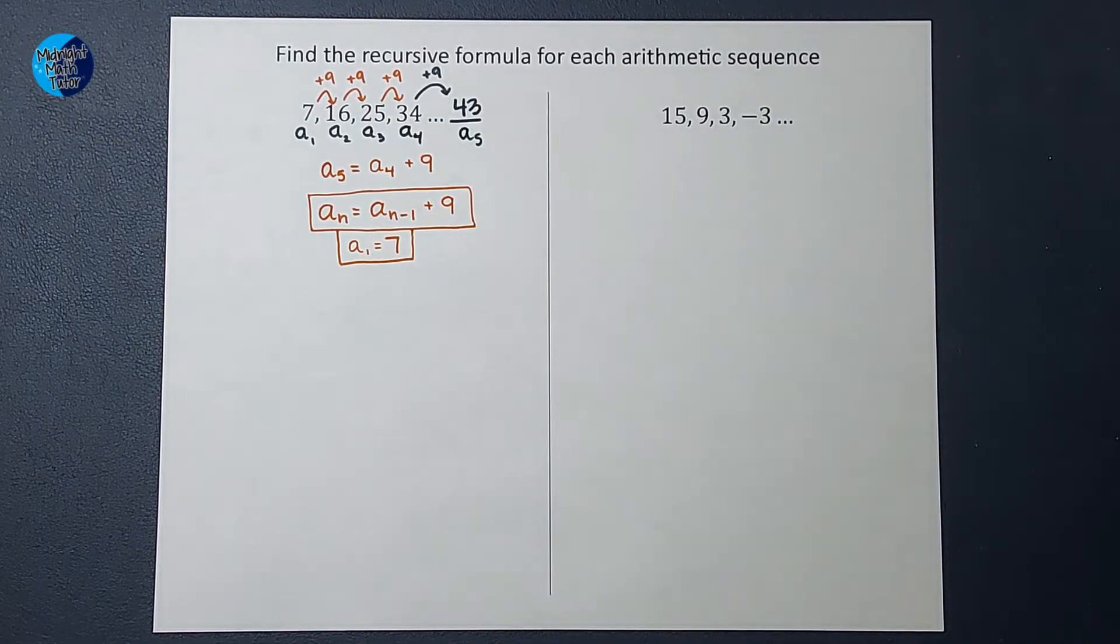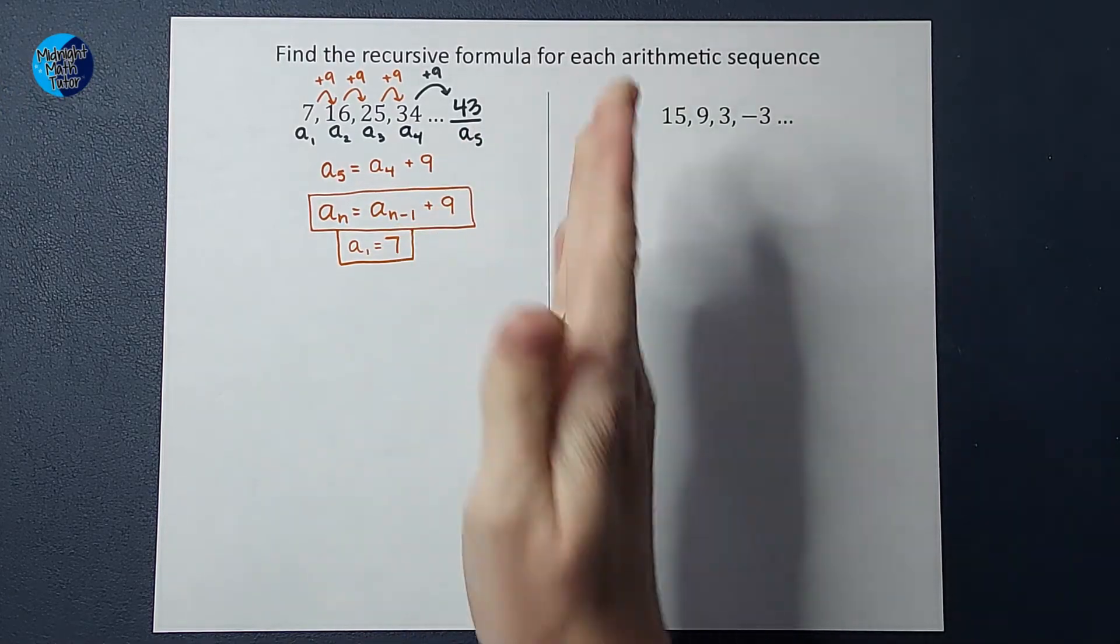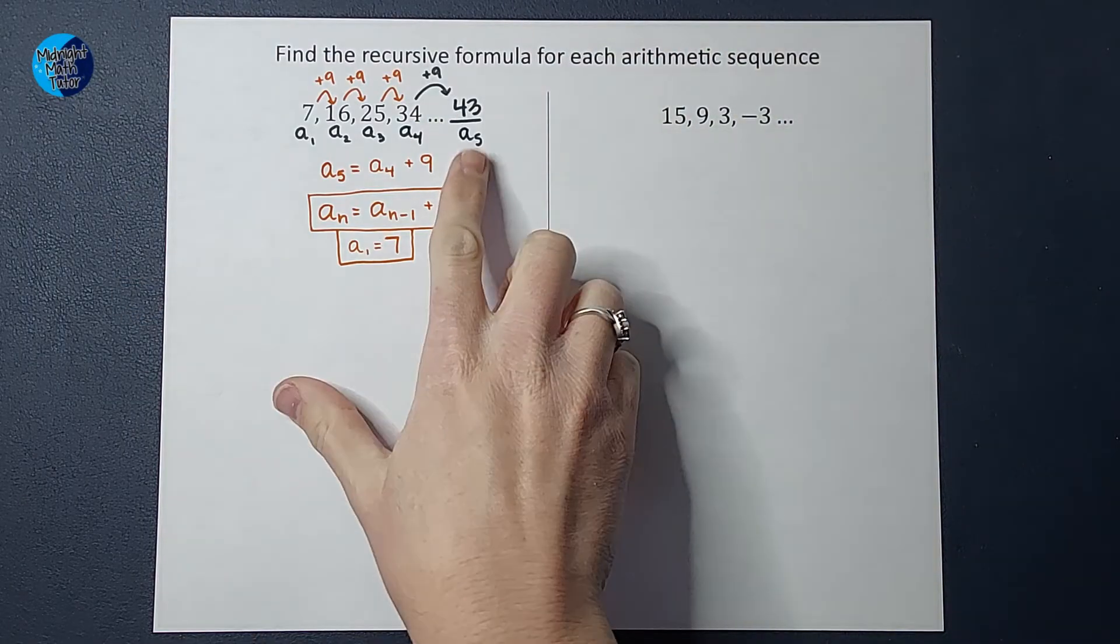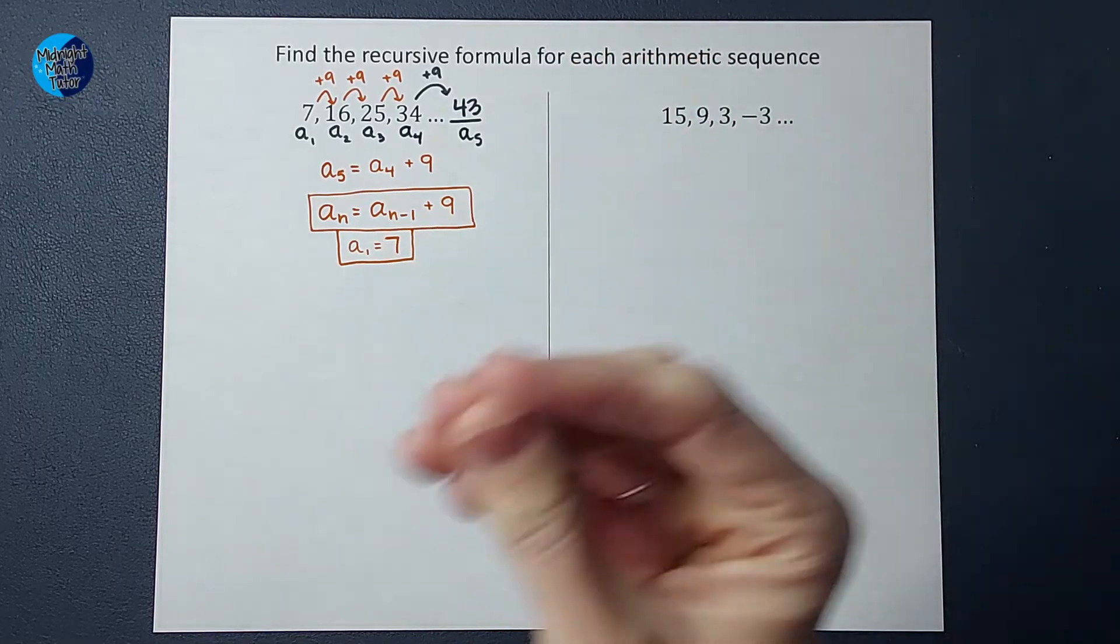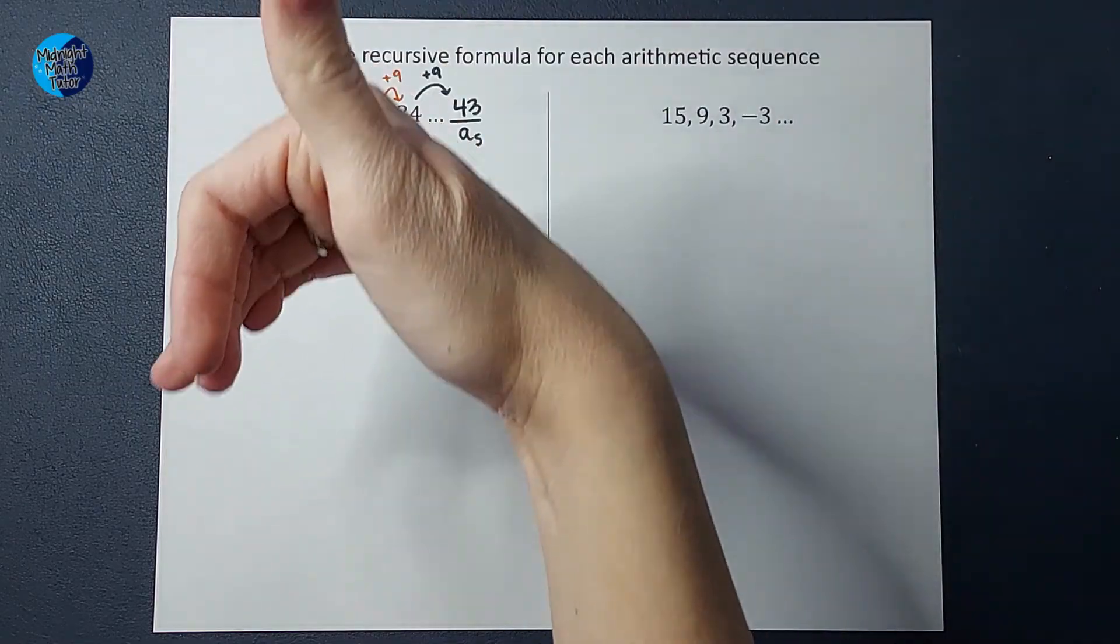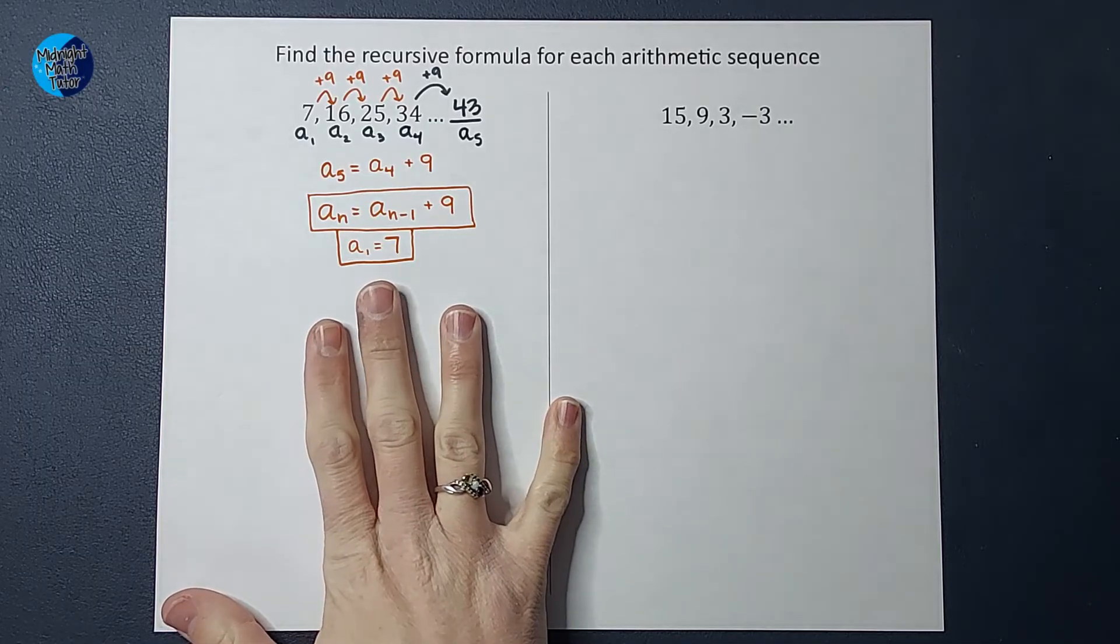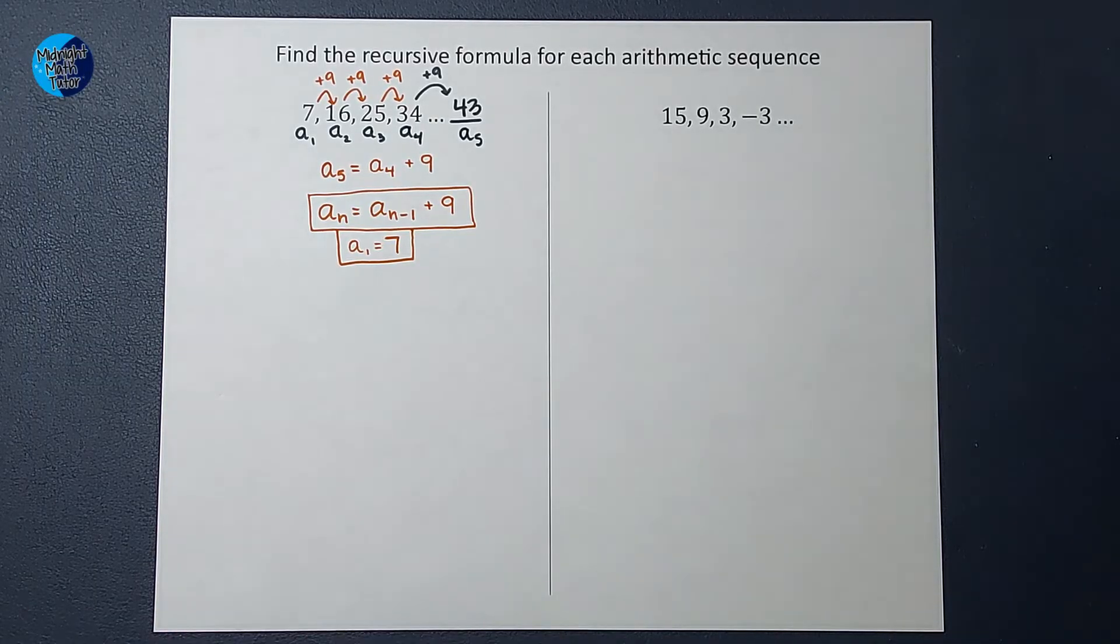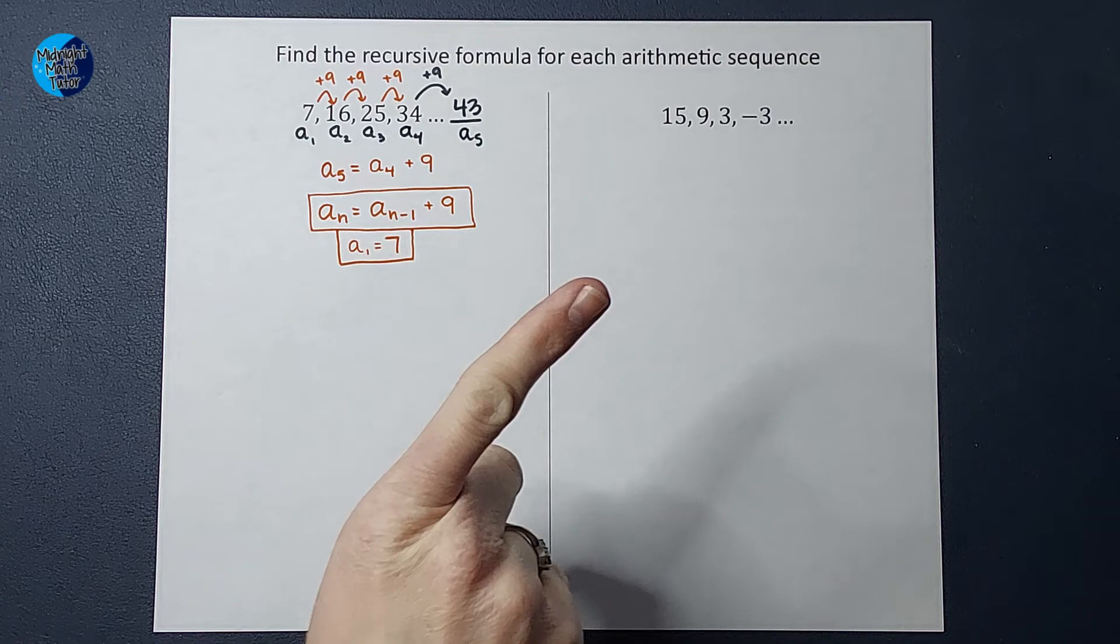Recursive formulas are wonderful, but they have a limitation. To find a number in the sequence, I have to know the one before it. To know the fifth term, I had to know the fourth. So if I want the hundredth term, I can find it, but I have to know the 99th, and to know the 99th I need the 98th, and so on. This is where we're stopping on this one. But if you want to learn about explicit formulas where you can figure out whatever number you want without knowing the one before, check out that video in the corner.